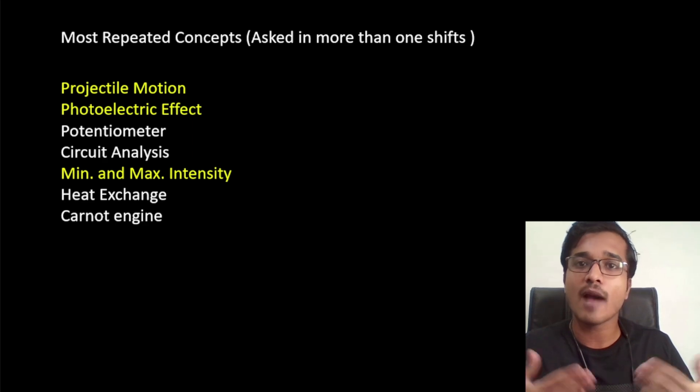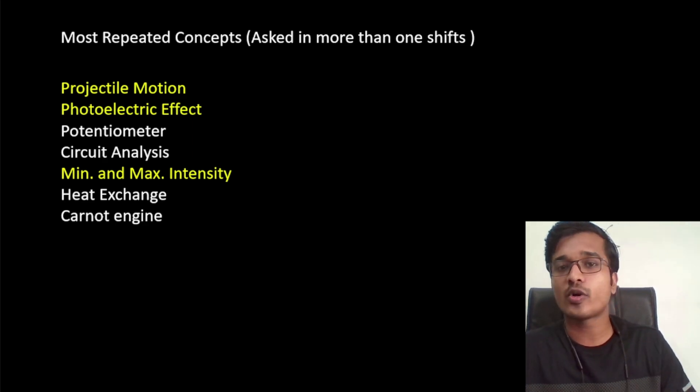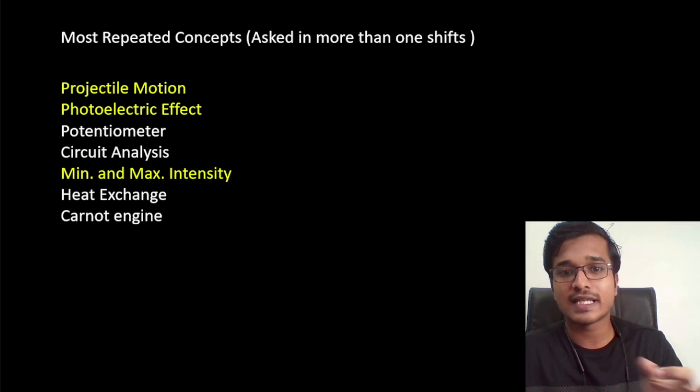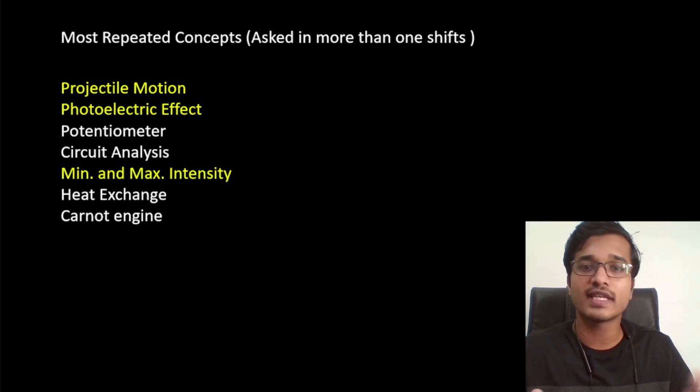So we can help you in the second attempt. Then potentiometer - also in multiple shifts. Circuit analysis - multiple shifts. We have seen current electricity has two questions fixed, and these two topics are coming together. So you have to focus on them. Then minimum and maximum intensity - this was important. Three questions on I max upon I min, these types of problems. Then heat exchange - that was the most repeated concept. And Carnot engine - in two shifts.